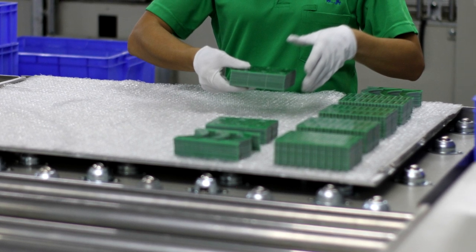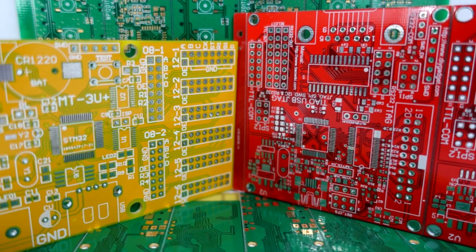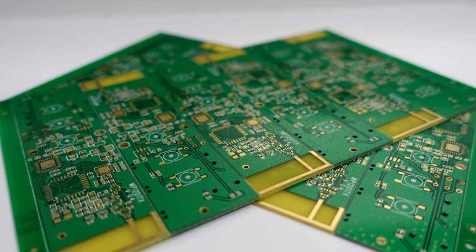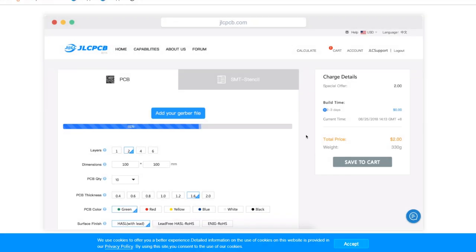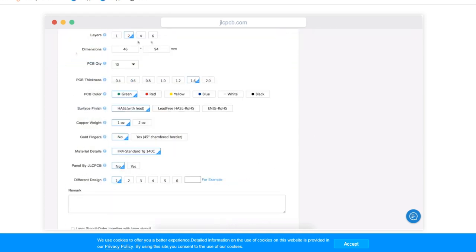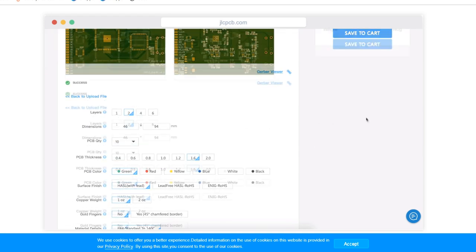But before ordering, remember that there are always some delivery charges included like in any other shipping process. So don't just blame them if you live very far from China. All you have to do then is upload your Gerber file to their website and wait, of course, till you get the PCBs.